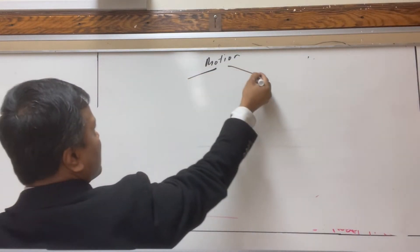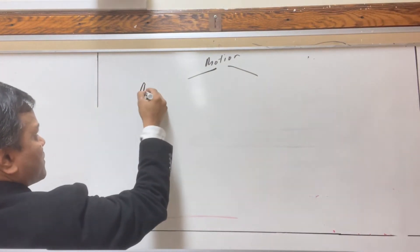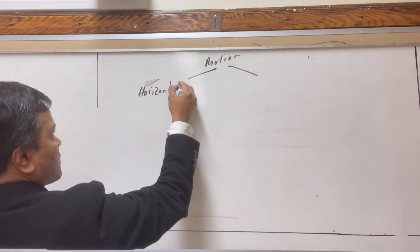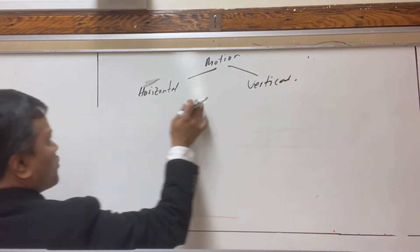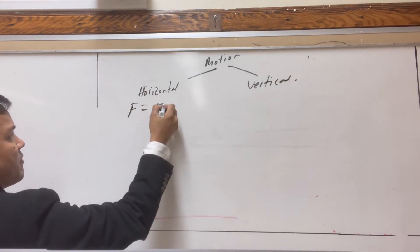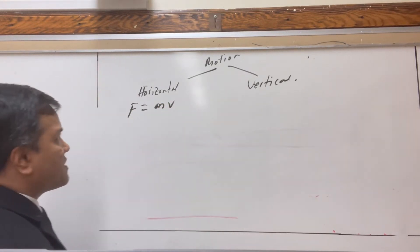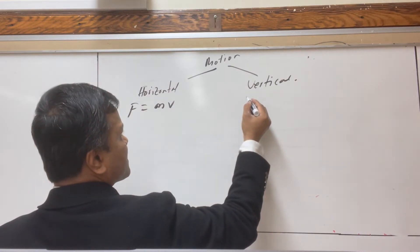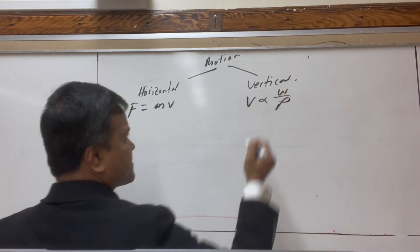Aristotle divided motion into two types. The first is horizontal motion, where his hypothesis is F equals M times V — M for mass and V for velocity. For vertical motion, his equation is that velocity is proportional to the weight or density.